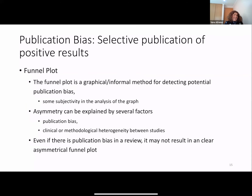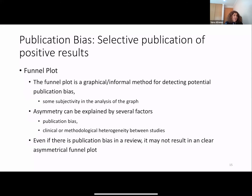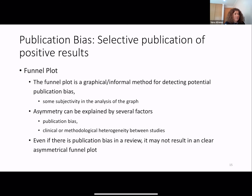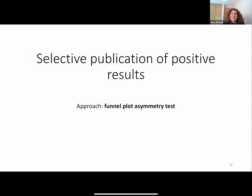The funnel plot is a graphical, informal method for detecting potential publication bias, so there is some subjectivity in the analysis of the graph. Asymmetry can be explained by several factors — one is publication bias — but can also appear through clinical and methodological heterogeneity between studies. Even if there is publication bias in a review, it may not result in a clearly asymmetrical funnel plot. But if we have asymmetries, we can say there is a possible publication bias. To give some objectivity in the analysis, some tests have been developed.